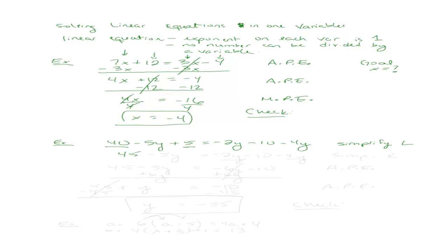When I do that, I get 45 and the negative 5y can just stay there. Now let me simplify the right side, now that I'm done simplifying the left side. On the right side, I can combine 2y and negative 4y. When I combine those two, I get negative 6y minus 10.